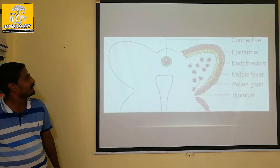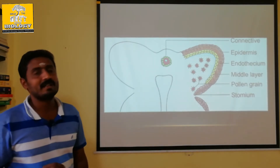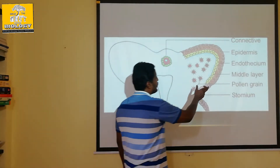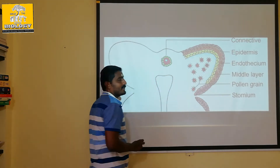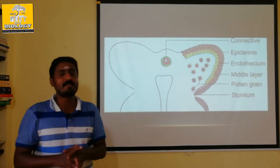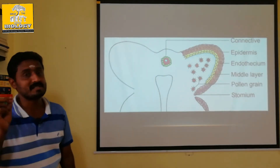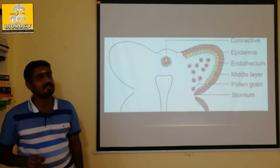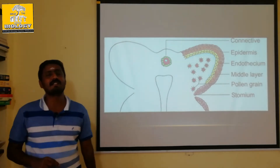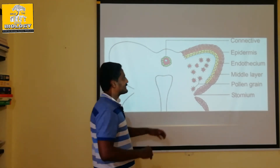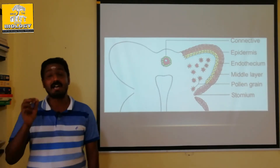The formation of the inner Tapetum is very important. The Tapetum is present in the connective tissue region. In many videos we have discussed primary parietal cells and the anterior wall layer. In the connective tissue, the inner Tapetum is very important. The primary parietal cells are related to the Tapetum cells, and the connective tissue involvement of the Tapetum cell is significant.